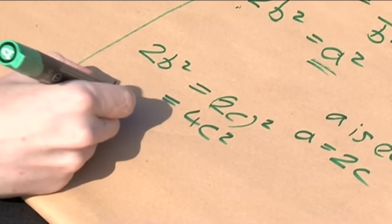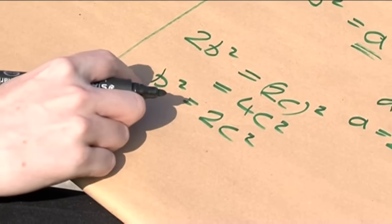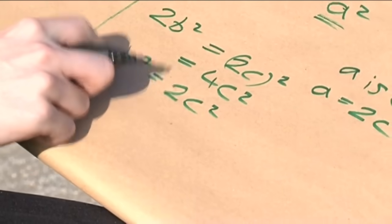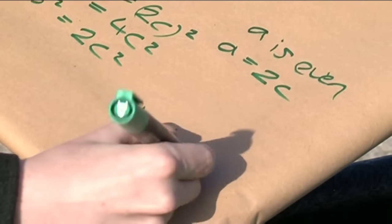In other words, I'm saying b squared is equal to 2c squared. Can you see that? b squared is even. If b squared is even, like before,